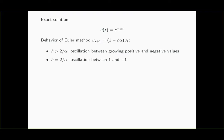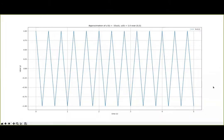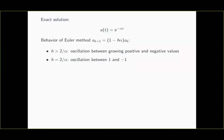As we decrease h to exactly 2/α, the Euler method changes again: we get an oscillation between precisely the two values 1 and -1. We can verify this from the update formula — if h = 2/α, then (1 - h·α) simplifies to -1. Setting h = 2/α = 1/5, we enter this regime of oscillating behavior: we start at 1, go down to -1, go up to 1 again, go down to -1 again, and so on. The next iterate is simply the negative of the previous value.